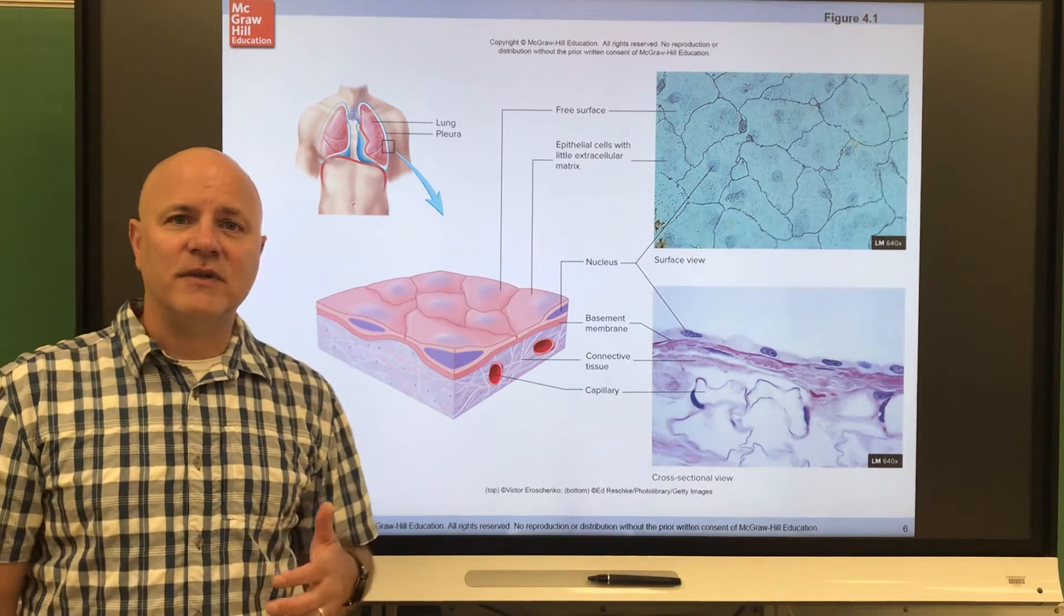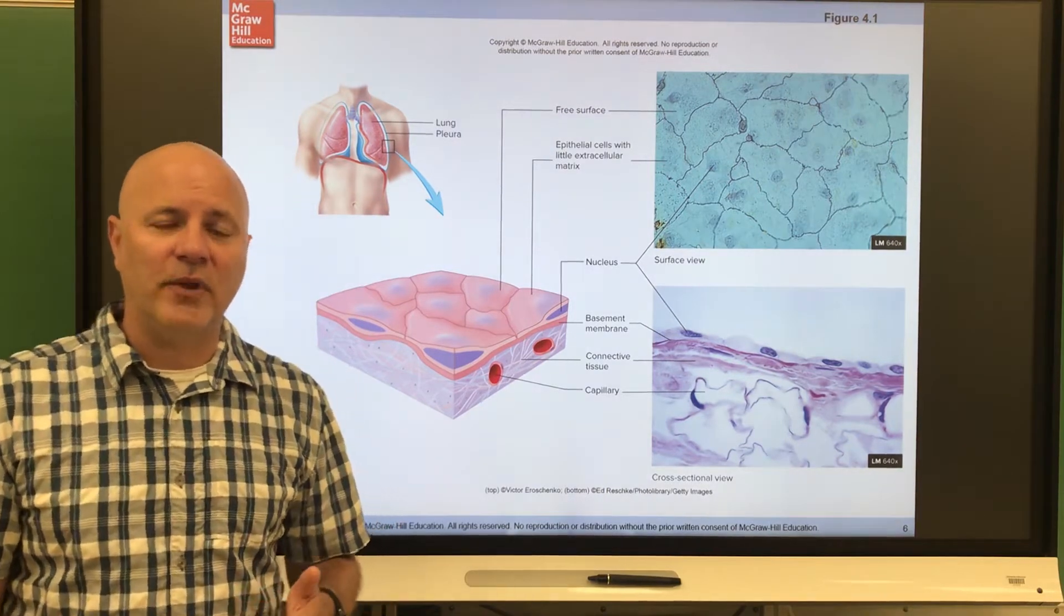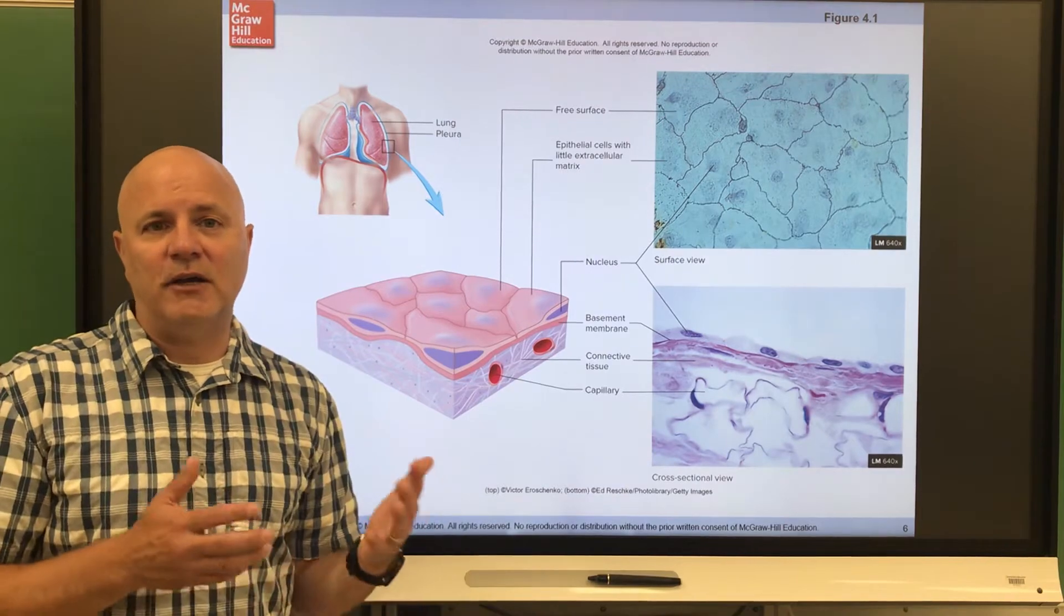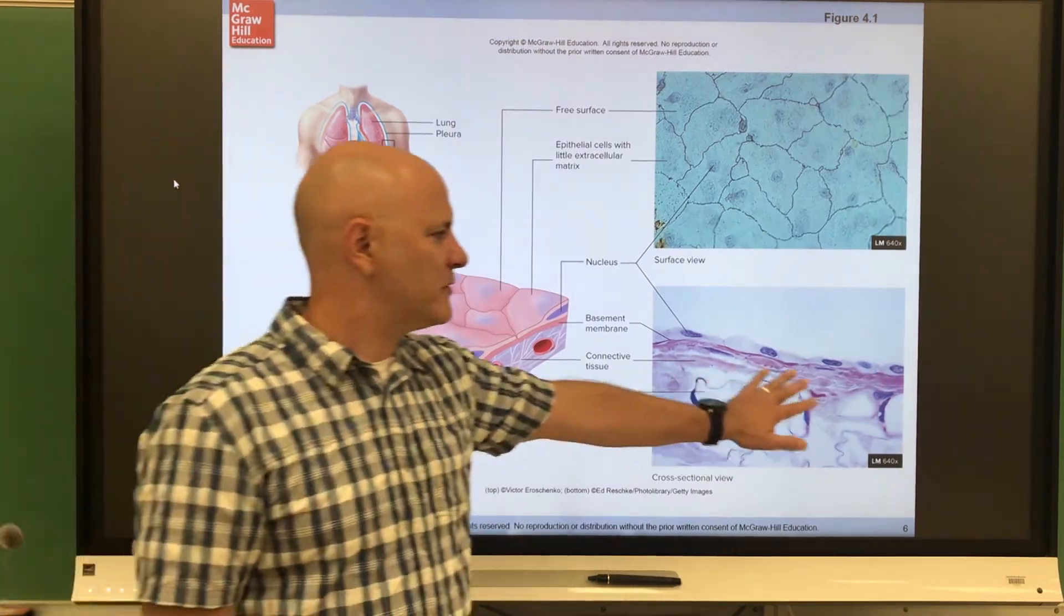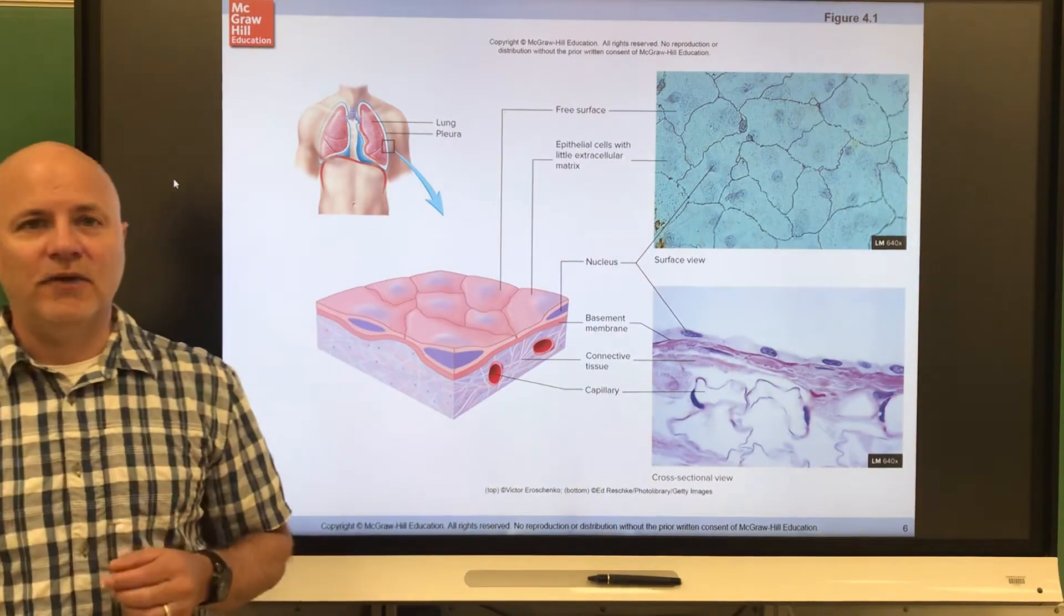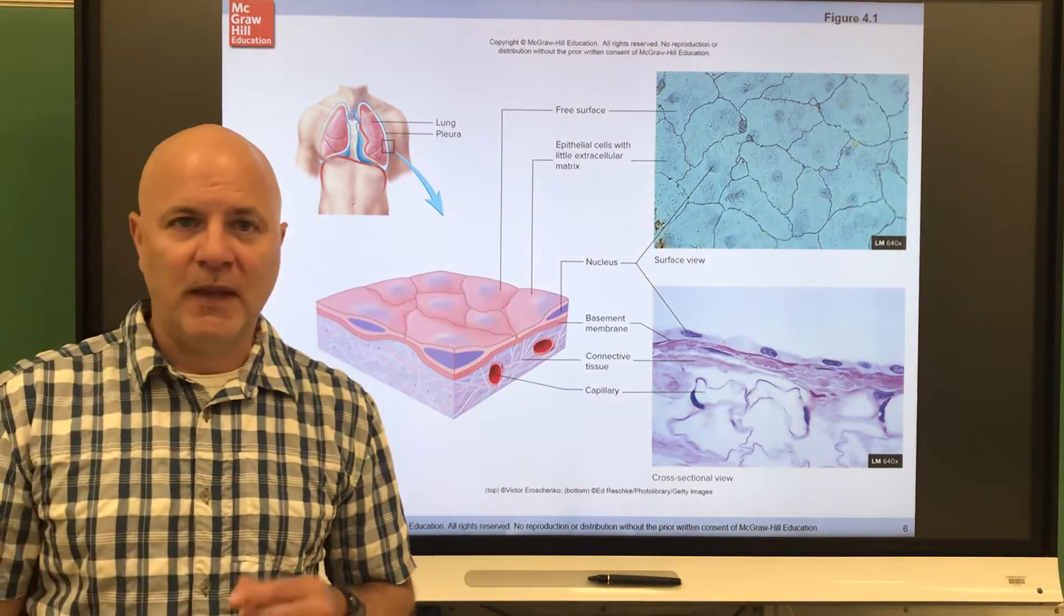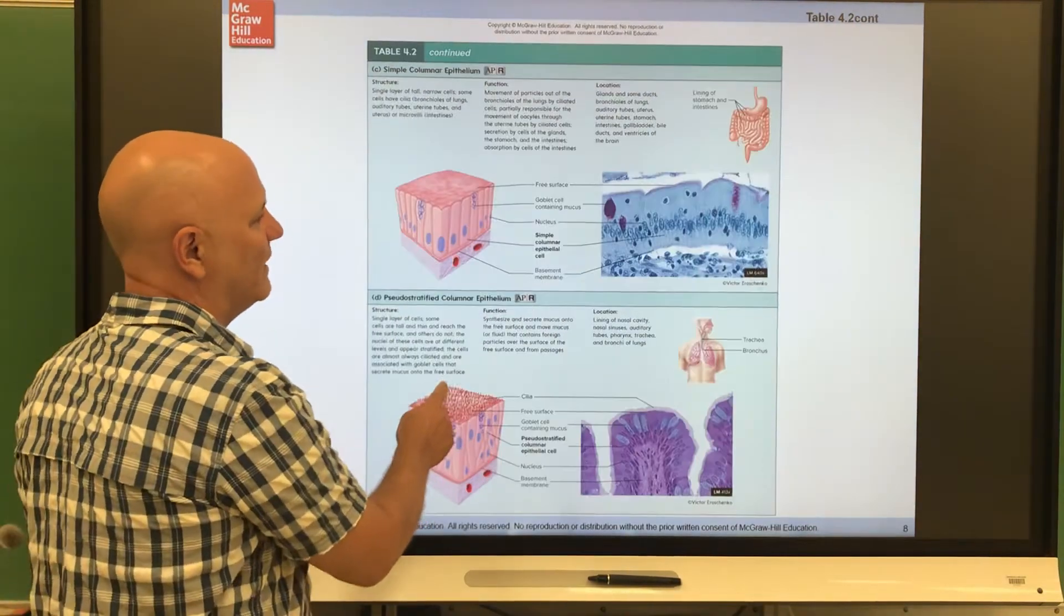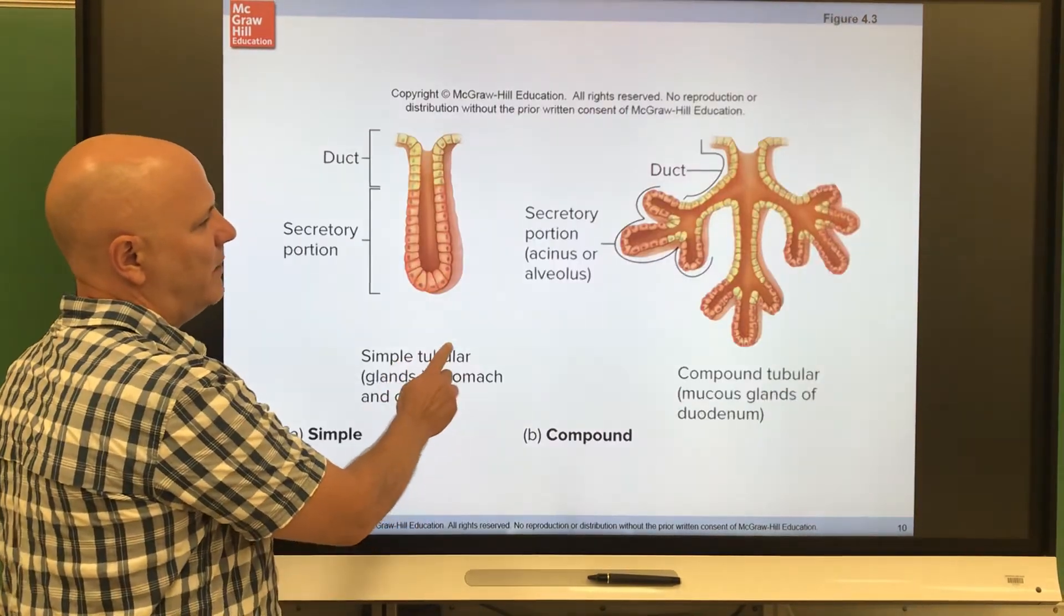But its last characteristic, it has a high regenerative ability. So it heals quickly. So even though it doesn't have a blood supply directly to it, that blood supply comes from the connective tissue right below it. And so it'll heal very, very quickly because of that. Now we're going to look at all the different types of epithelial tissue in lab. So I'm just going to skip by this.